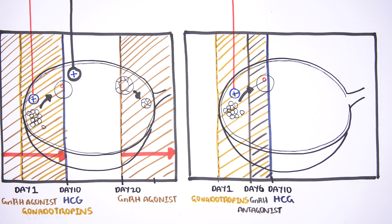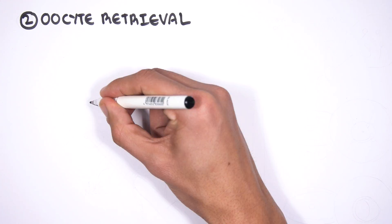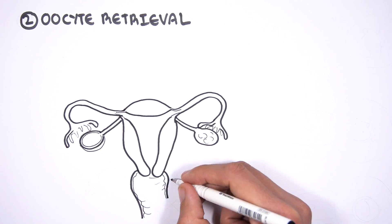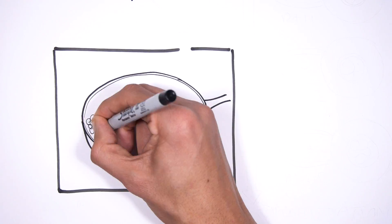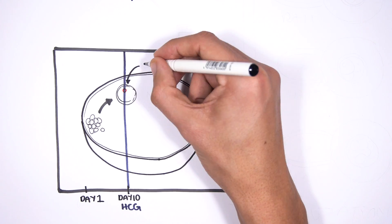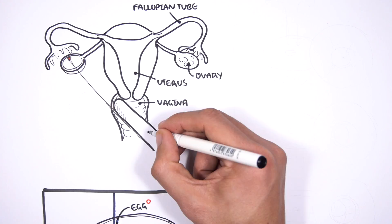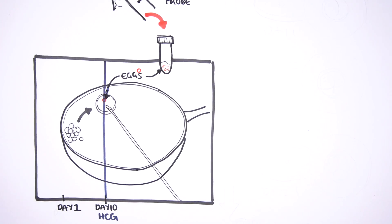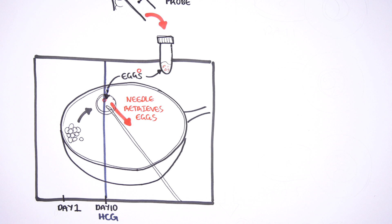The egg is then collected about 36–38 hours after the HCG injection. This brings us to step 2 of in vitro fertilization: oocyte retrieval. Here again is the lower female reproductive tract — the vagina, the uterus, the fallopian tube, and the ovary. The eggs are collected about 36–38 hours after the HCG injection. Oocyte retrieval is performed using a long, hollow needle introduced via the vagina under ultrasound guidance. The needle retrieves the egg from the mature follicle. Eggs are then placed in culture media and incubated before being fertilized.